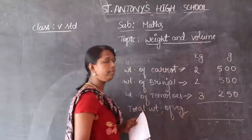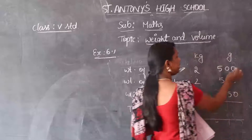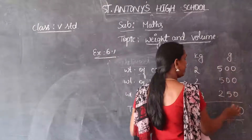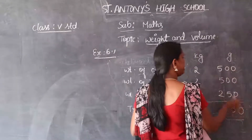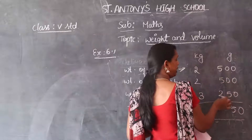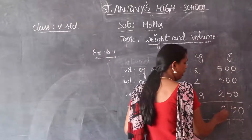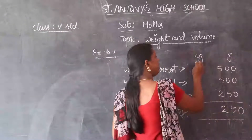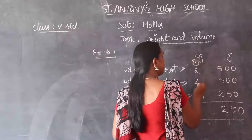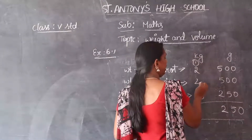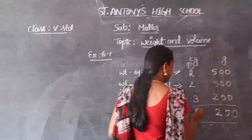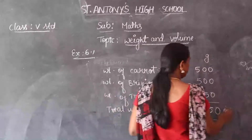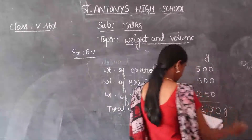Adding: 0 plus 0 is 0, 0 plus 5 is 5, 5 plus 5 is 10, 10 plus 2 is 12 — write 2 and carry 1. 1 plus 2 is 3, 3 plus 2 is 5, 5 plus 3 is 8. Answer is 7 kg 250 grams total weight of vegetables.